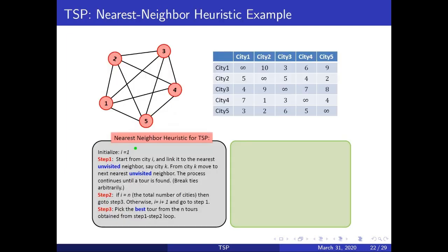Now let us look at the nearest neighbor heuristic. Here we have an example of a 5-city problem, and here is the data matrix, and here are the steps for the nearest neighbor heuristic. Let us pick node number 1 as the start city. In this matrix, we will eliminate the column for city 1 because we do not want to come back to city 1 until we finish the entire tour.